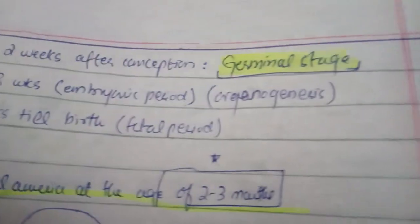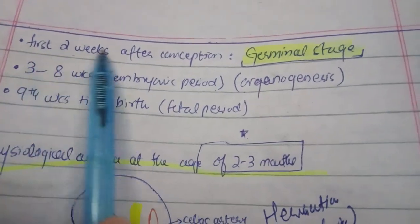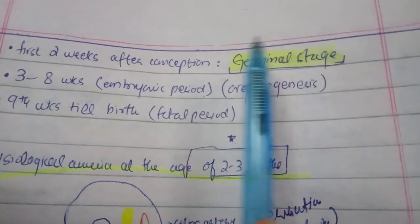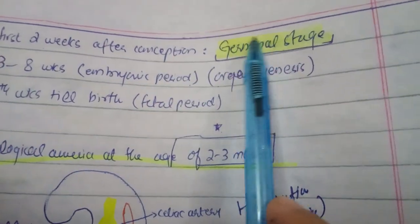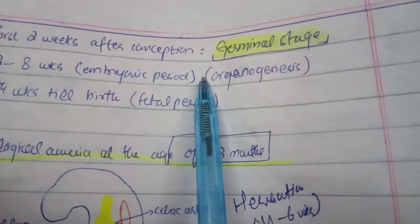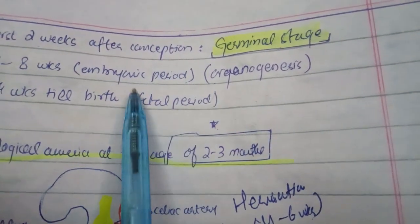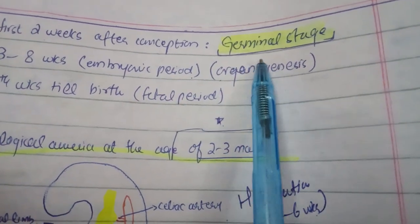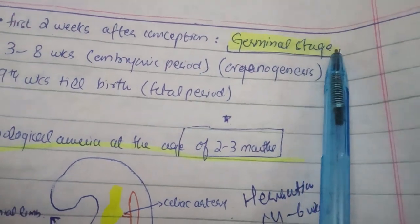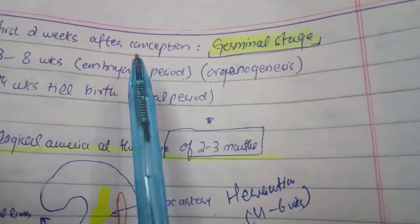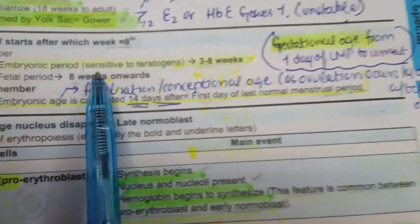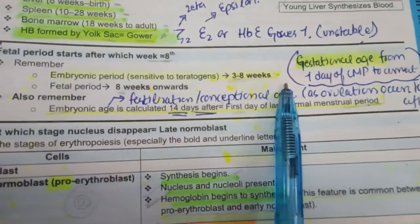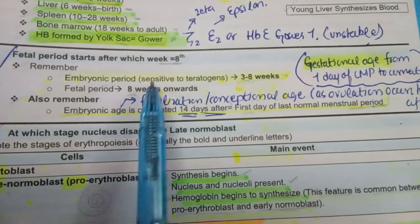The first 2 weeks after conception are the germinal stage, in which the cell is dividing. After ovulation the cleavage stage occurs, where the cell keeps dividing via mitosis, forming a morula ball of cells, then a blastocyst, and implantation occurs. That stage of dividing cells is the germinal stage. From the 3rd week onward we enter the embryonic phase — 3 to 8 weeks is the embryonic period. Fetal period is from the 8th or 9th week onward.